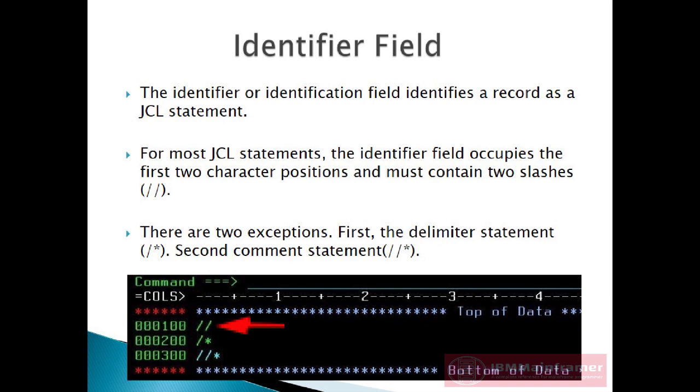So for most JCL statements, the identifier field occupies the first two character positions and must contain two forward slashes. But there are two exceptions.